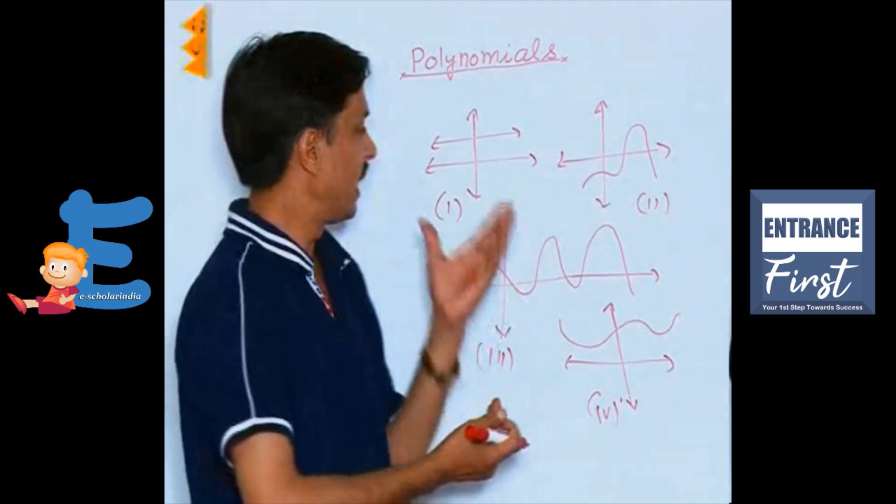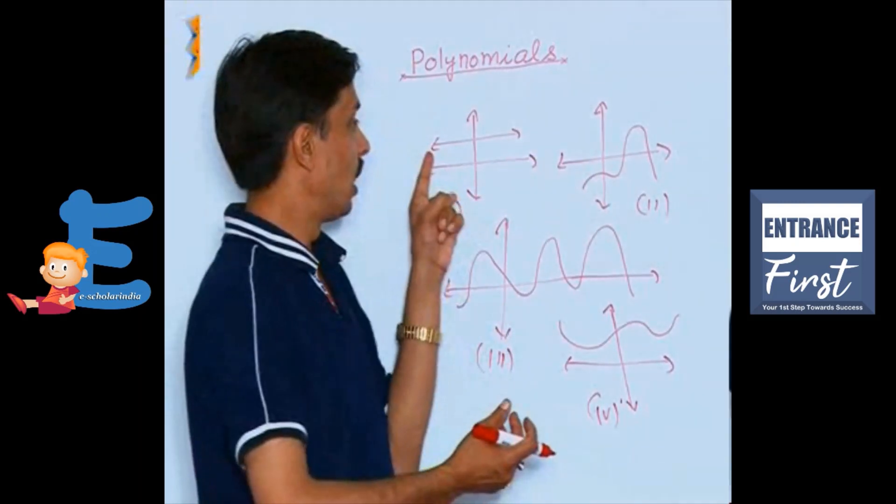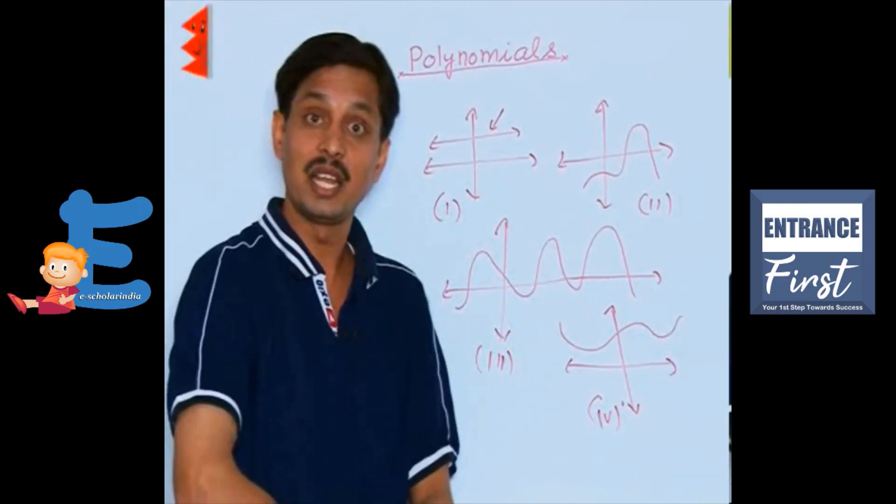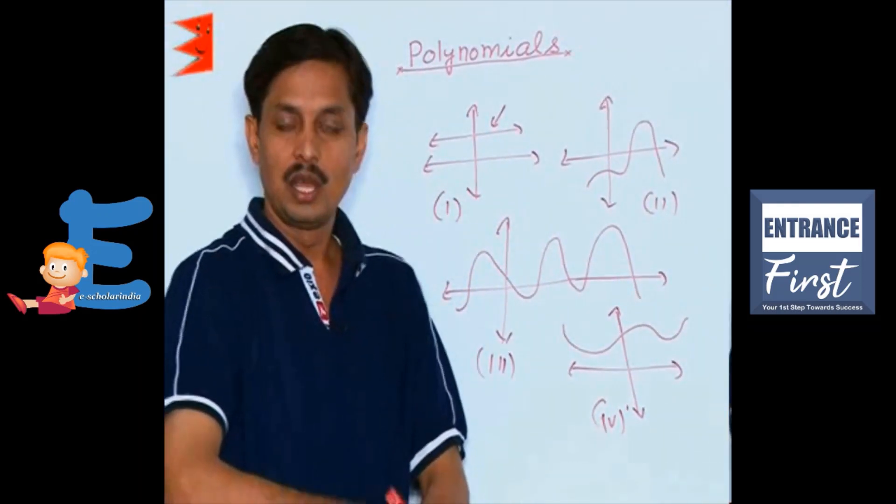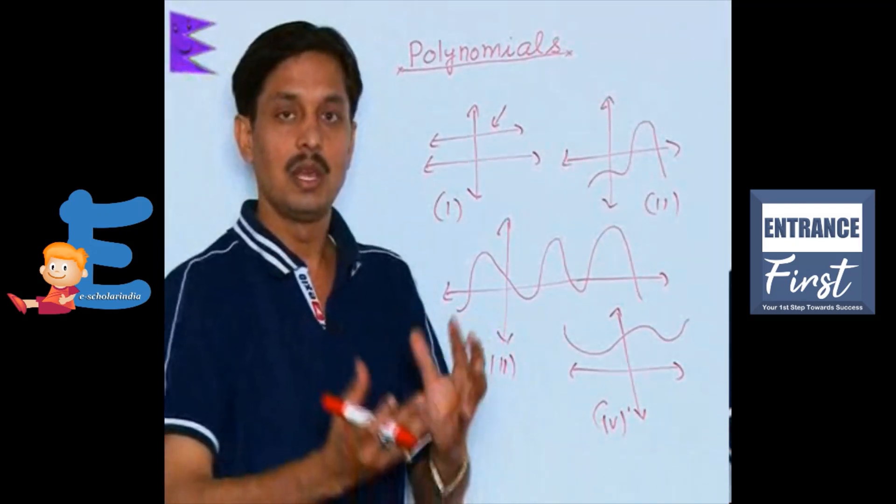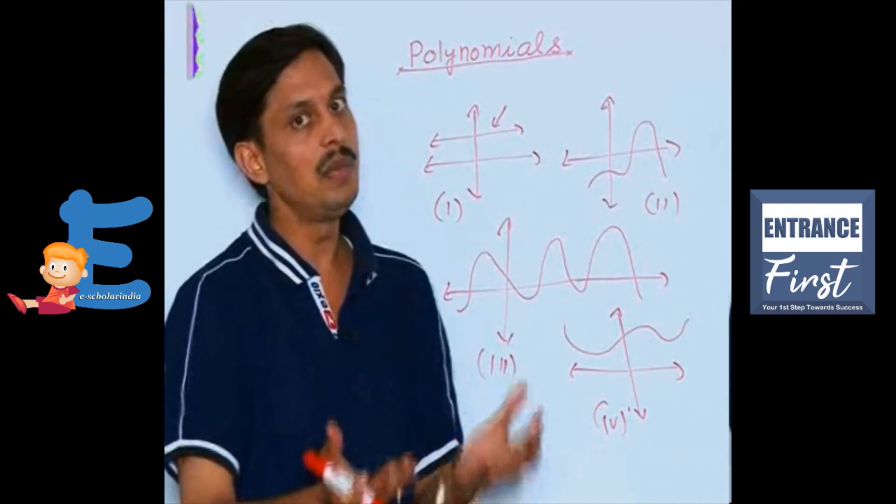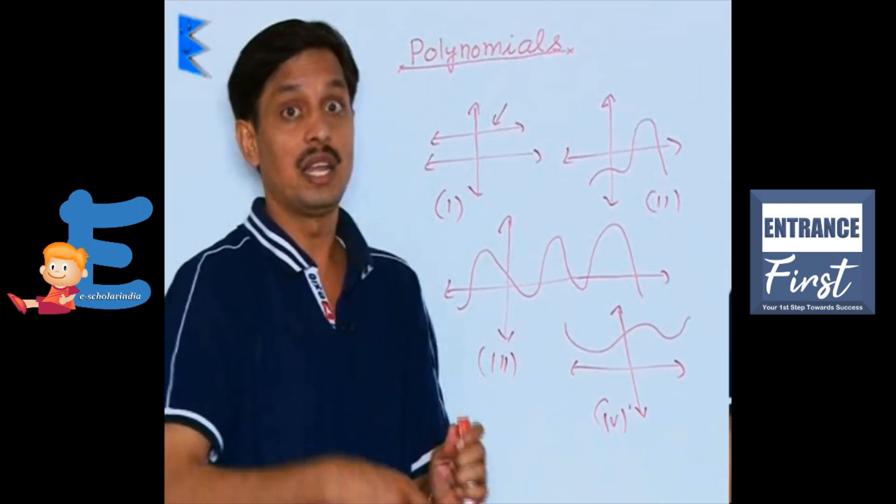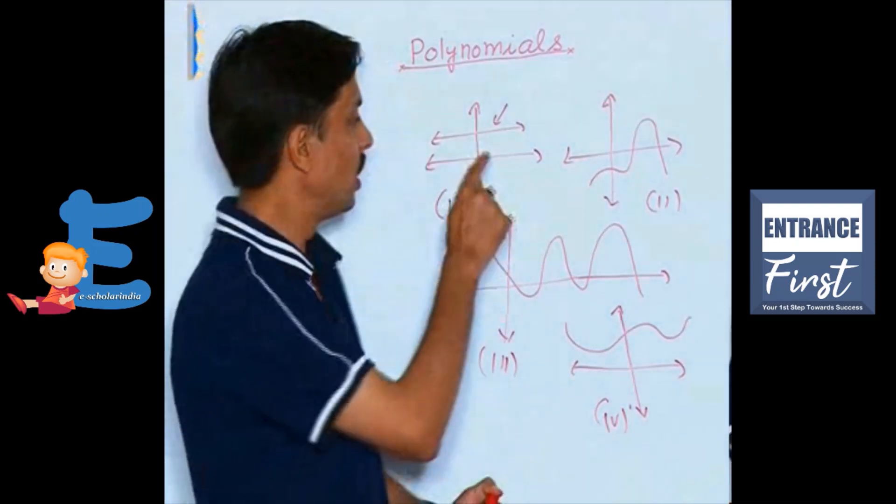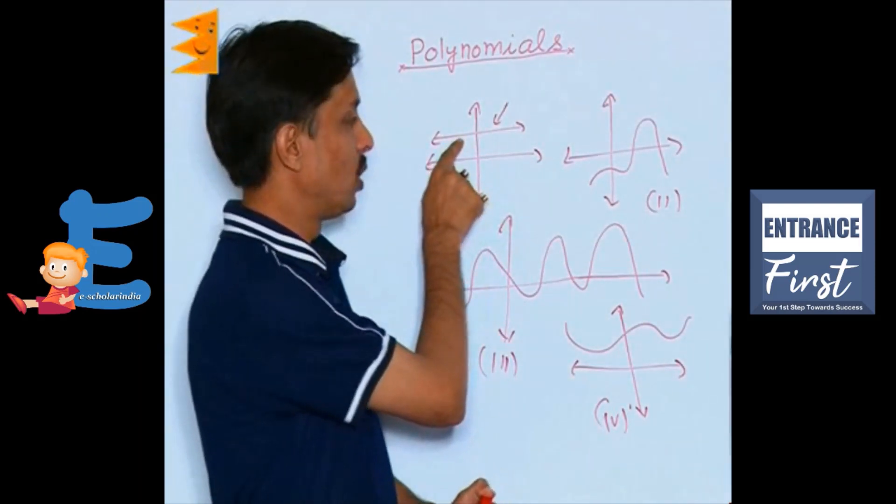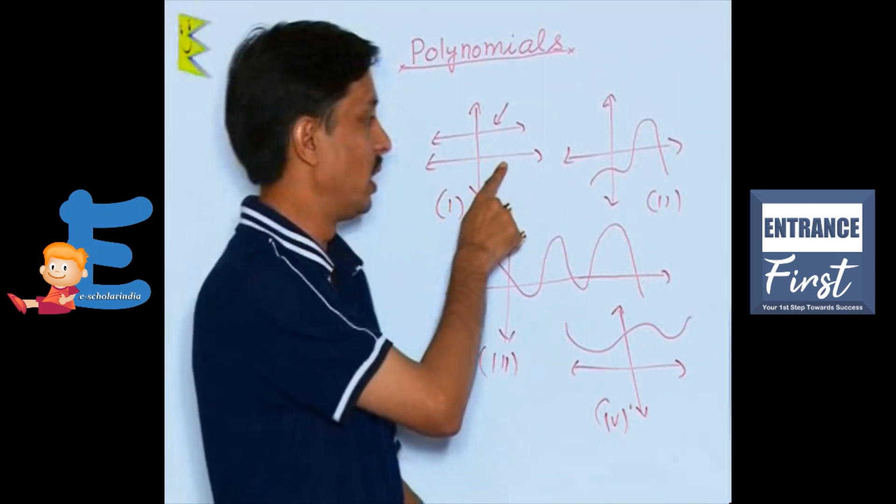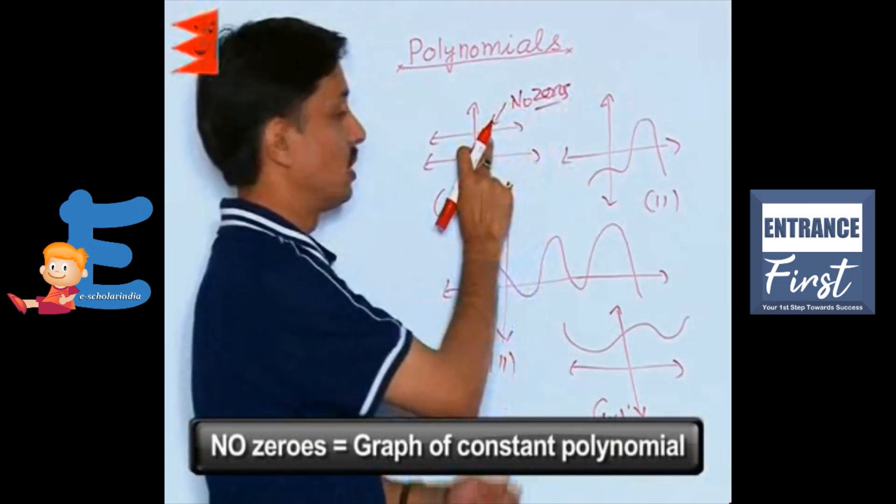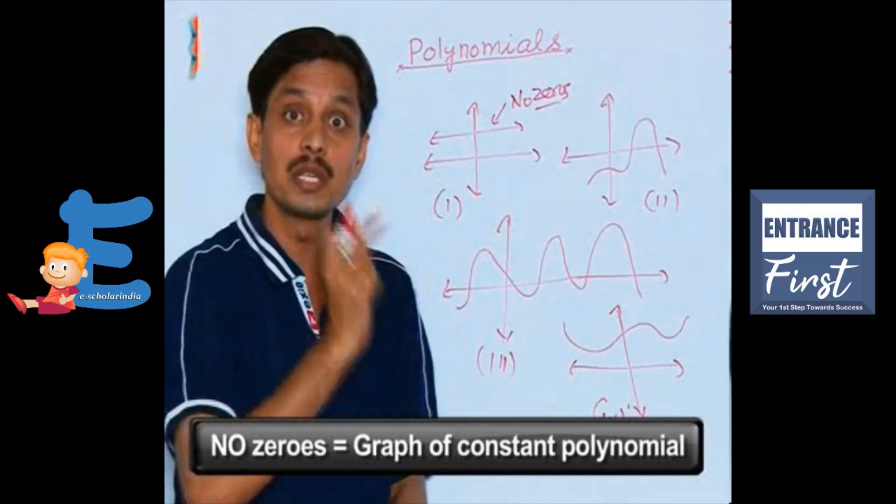You can say it has none of the zero because the line, this line is not intersecting x-axis at any point. If a line or a graph or a curve can intersect x-axis, it means it has some zeros and as many zeros it has at as many points it is intersecting. Here you can say this line is not intersecting the base that is the x-axis, so it has no zeros. If it has no zeros, it means this is the graph of a constant polynomial.